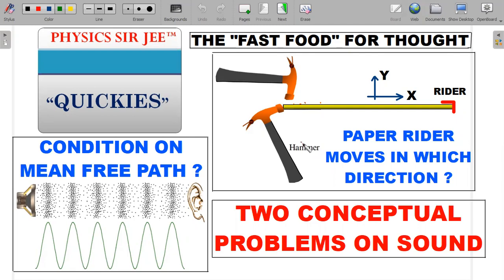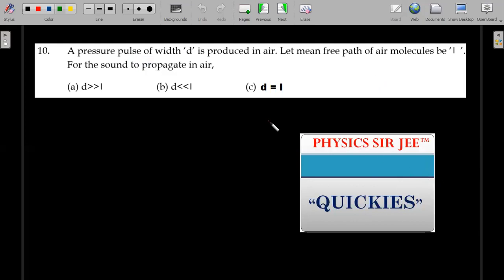Here's the first question: a pressure pulse of width d is produced in air. Let mean free path of air molecules be l. Then for the sound to propagate in that air, what condition should be valid? Should d be equal to l or should d be comparable to l, both in terms of whether it is greater or lesser? You are supposed to investigate and answer it.